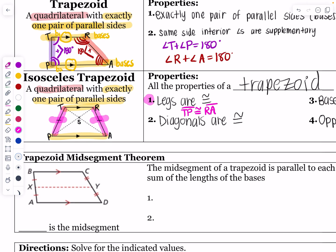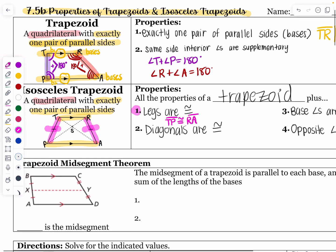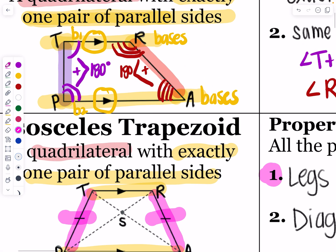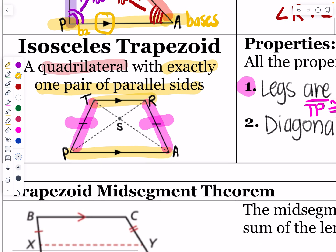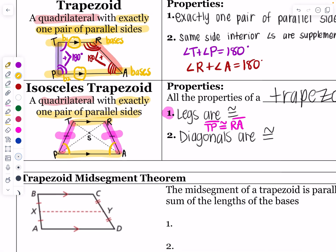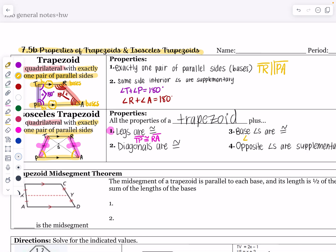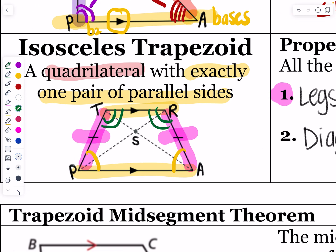In an isosceles trapezoid, the base angles are also congruent. Angles that sit on the same base are congruent. So angle P is congruent to angle A — those are base angles on the bottom base. Angle T is congruent to angle R — those sit on the top base. They're still supplementary: a green plus a yellow equals 180. But instead of four different values, an isosceles trapezoid gives us two pairs of congruent angles.